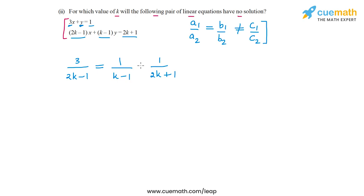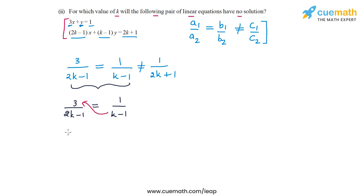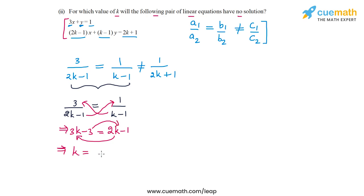The last ratio should not be equal to the first two. Setting 3 by (2k minus 1) equal to 1 by (k minus 1) and cross multiplying: 3(k minus 1) gives 3k minus 3, and (2k minus 1) times 1 gives 2k minus 1. Collecting terms in k: 3k minus 2k equals k, and minus 3 becomes plus 3 on the right, giving 3 minus 1 equals 2. So k is equal to 2.